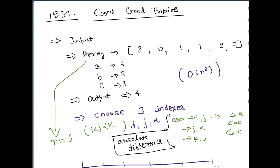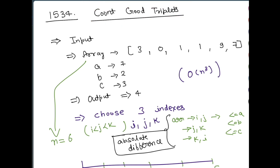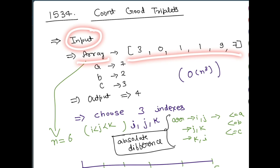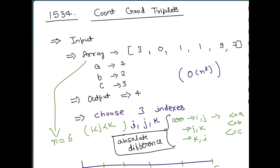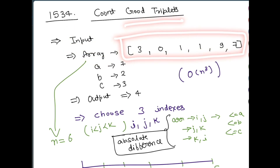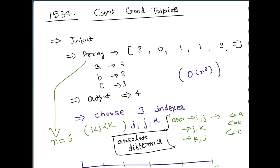Hey, hi everyone! In this video we are going to solve the LeetCode problem of the day, and the problem is 'Count Good Triplets'. In this problem we are given an input array of integers and we need to find out how many good triplets we can have in this particular array. The question is: what is a triplet and what is a good triplet?